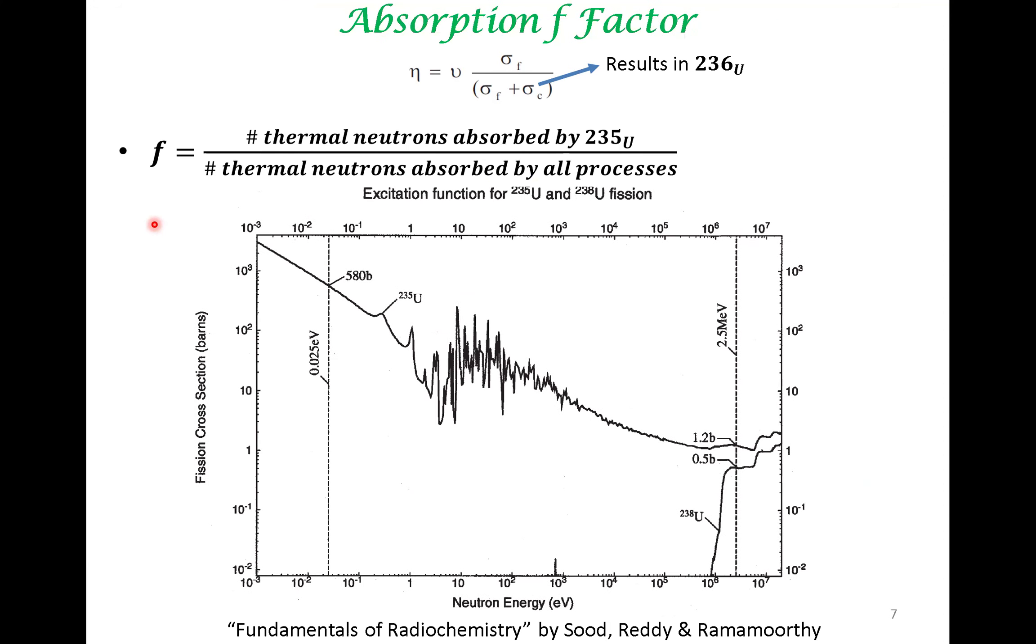The last factor is called the absorption factor. The f-factor is the thermal neutron absorbed by U235, that's going to be advantageous, divided by the thermal neutrons absorbed by all other processes. Why is this important? Because besides the fuel, this is the fuel, there are so many other components in the reactor.